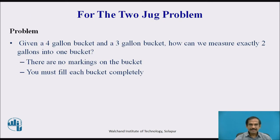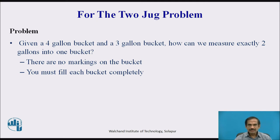Let us consider the two-jug problem. The problem is: given a four-gallon bucket and a three-gallon bucket, how can we measure exactly two gallons into one bucket? There are no markings on the buckets and you must fill each bucket completely.